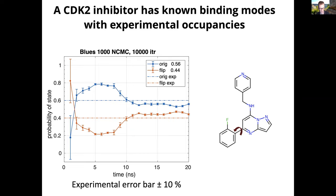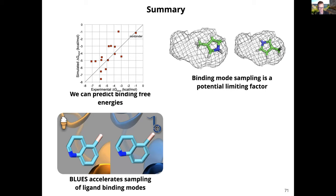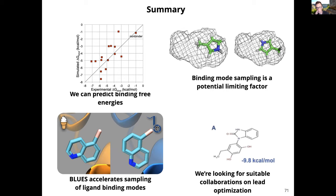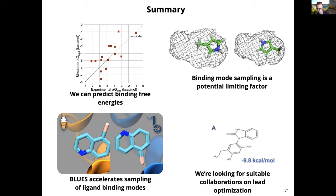So to summarize: we can predict binding free energies with some accuracy, but we sometimes have problems with slow sampling of different metastable states — different binding modes or different protein motions. We have this combined Monte Carlo molecular dynamics method called BLUES that can help accelerate sampling of different binding modes. We are working with different groups on applying these techniques to experimental drug discovery problems. Happy to take more questions — thanks for your attention and time.